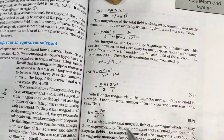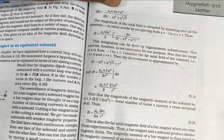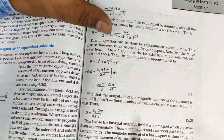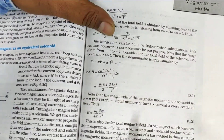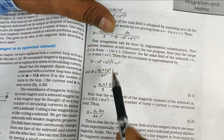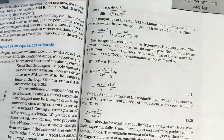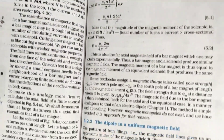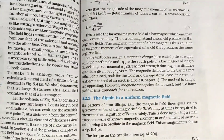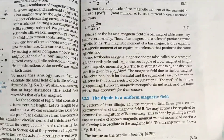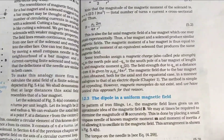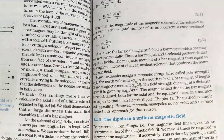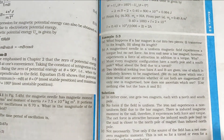This gives us the magnetic dipole moment of the solenoid. The next topic is the dipole in a uniform magnetic field. The expressions for the torque on a dipole in a uniform magnetic field are already derived.